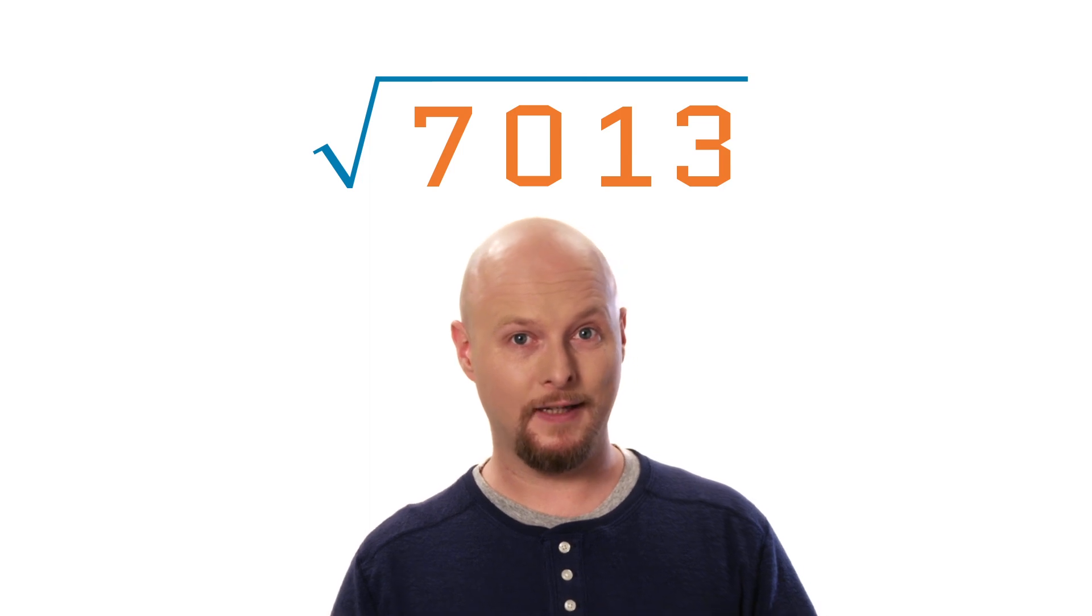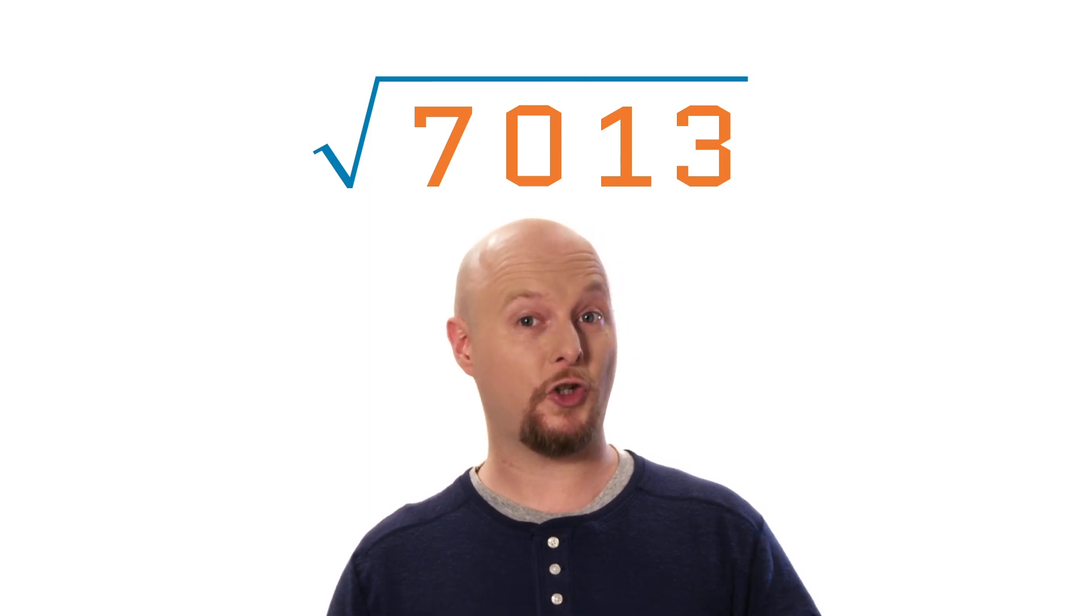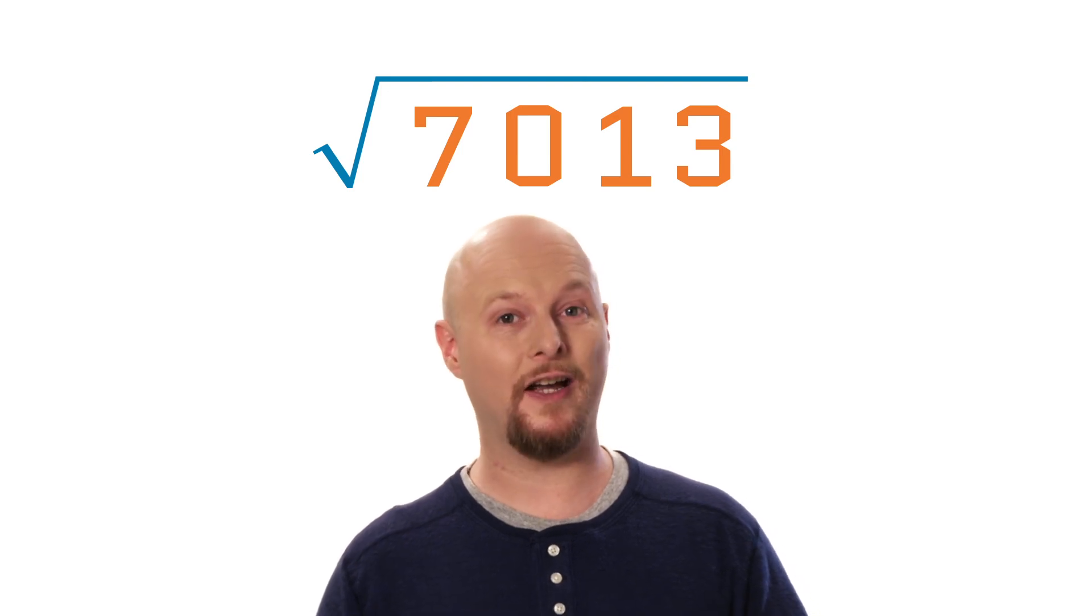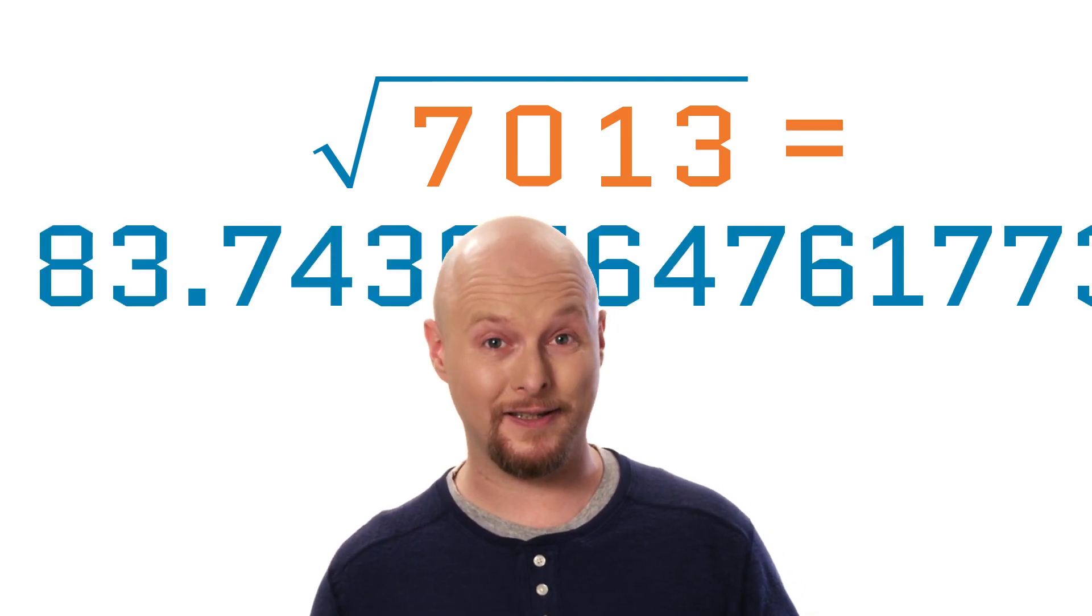Okay, so there are certain tasks that computers are obviously better at than we are. For example, quick, what's the square root of 7013? Now, while all of you were trying to cheat by opening up a calculator app, whatever device you're actually watching this on could have calculated the answer to a thousand decimal places.